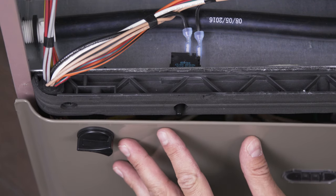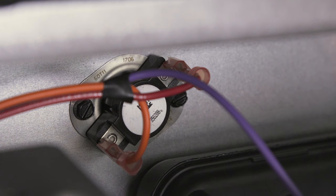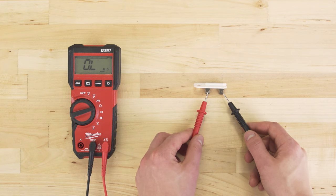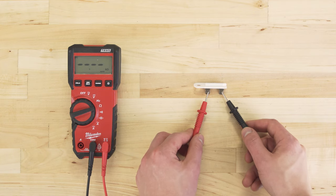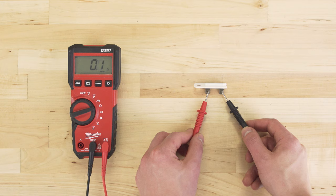Non-load components such as switches, thermostats, or fuses provide an unrestricted path for the electricity to pass through. These will typically have a resistance reading between zero and one ohm.